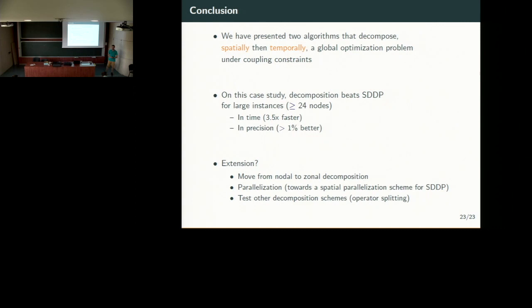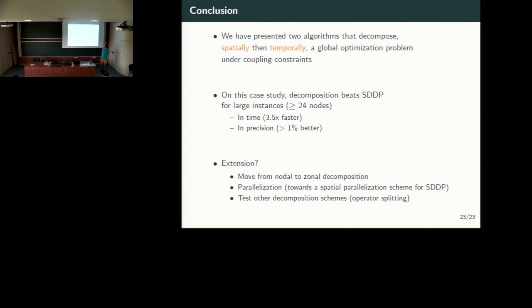What we want to do now is to use parallelization, because the parallelization of price and resource decomposition is straightforward. I have some problems with lambda functions that are difficult to serialize across processes, but that's a problem I hope to deal with this summer. We can also consider zonal decomposition — for instance, gathering buildings three by three and solving a problem corresponding to three buildings instead of one, which might give better results than a simple nodal decomposition.